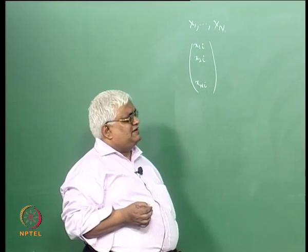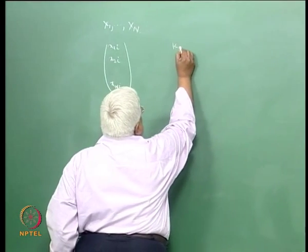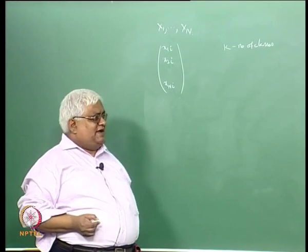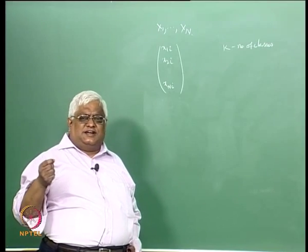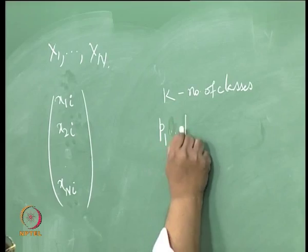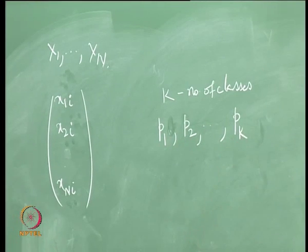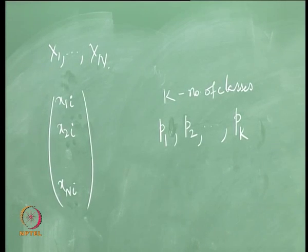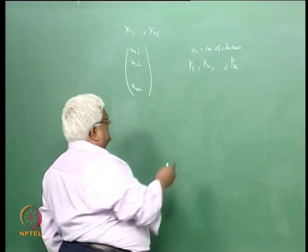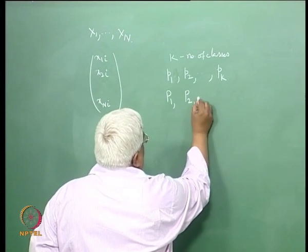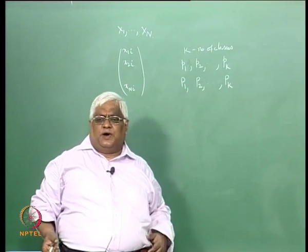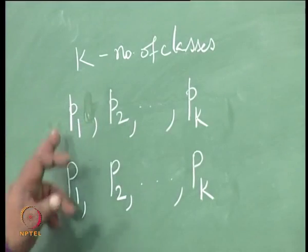Now let us say there are k number of classes, and let us assume that we know the class conditional density functions — for the first class it will be small p1, for the second class small p2, for the ith class small pk. There are k class conditional probability density functions, and the corresponding prior probabilities p1, p2 up to pk, where each is greater than 0 and their summation equals 1.